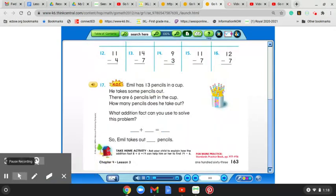Okay, now then, on number 17, we are back together and we want to look at this problem. And it is still keeping in mind that we are thinking about how to use subtraction and addition sentences to help solve problems. Now, Emil has 13 pencils in a cup. You can see that they drew the pencils on the side for us. He takes some pencils out. There are 6 pencils left in the cup. How many pencils does he take out?